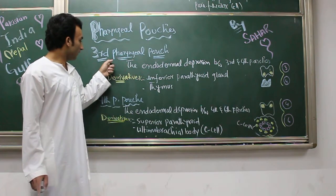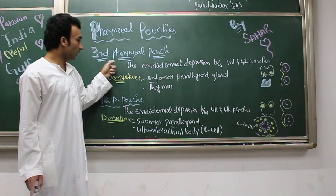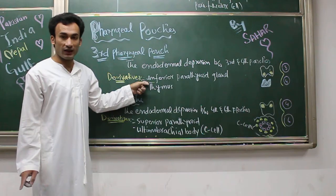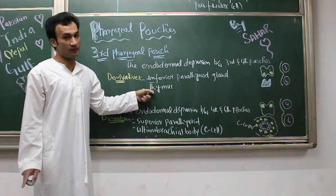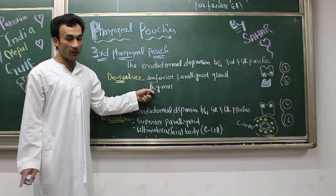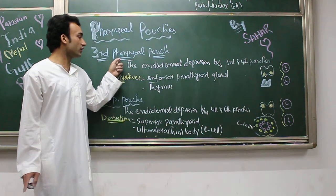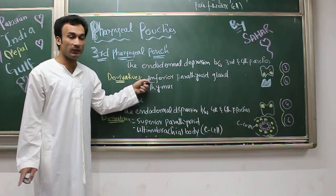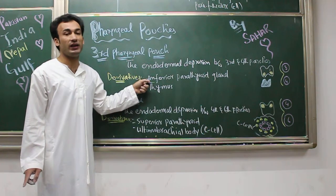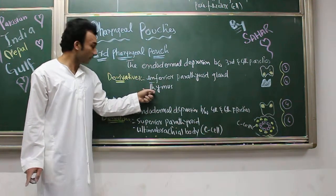Remember for MCQs: the derivatives of the third pharyngeal pouch are the inferior parathyroid gland and the thymus.